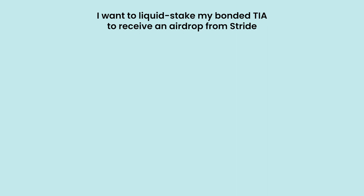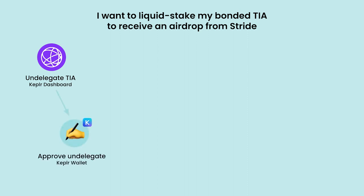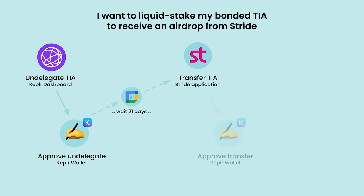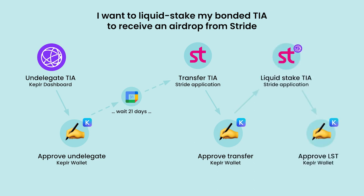How does he do that right now? Start by un-delegating your Celestia token and signing something in a wallet. Then wait for 21 days. 21 days later, he's got to set an alarm, wake up, figure out what he was in the middle of, and then go: let me now transfer it to the Stride chain — whatever that is — and that requires another signature. Then on the Stride chain, liquid stake it, and that requires another signature. So this is now 21 days and some change, and multiple signing transactions just to do the one thing he wanted. Today's UX sucks.